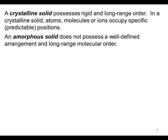A crystalline solid possesses a rigid and long-range order. In a crystalline solid, atoms, molecules, or ions occupy specific positions. An amorphous solid does not possess a well-defined arrangement and long-range molecular order.